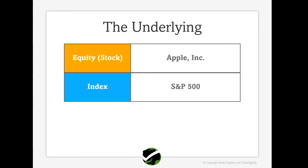Index options are different than equity options primarily in that they are cash settled. What this means is that if you have an index call option — which is the right to buy — you can't actually buy shares of an index like you can buy shares of stock in a company. So if you use your option on an index, you simply get the cash equivalent of the transaction value in your brokerage account.